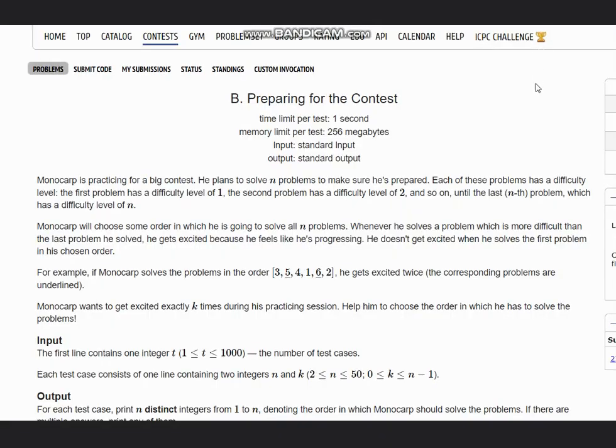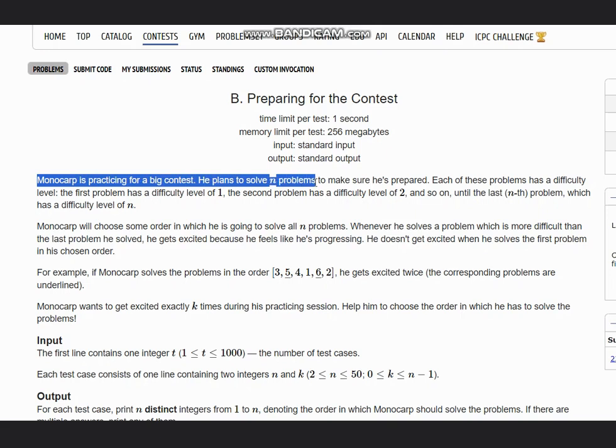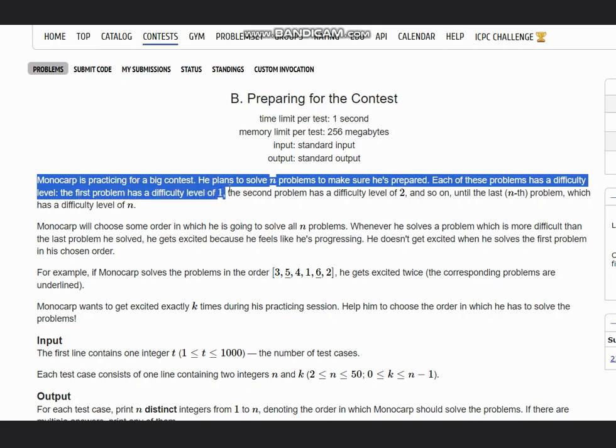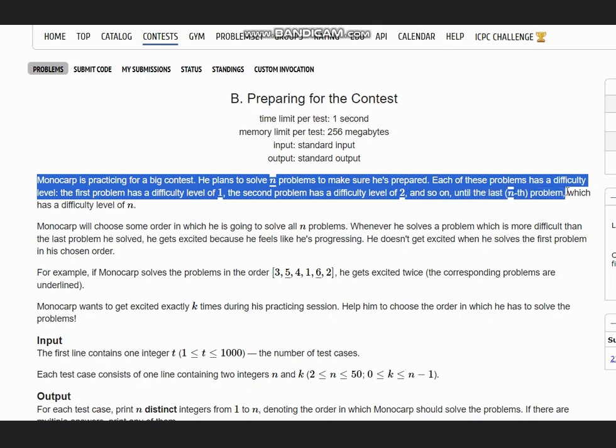Hello everyone, welcome to the channel. Here we are discussing the problem 'Preparing for the Contest' on CodeForces. The problem states that Monocarp is practicing for a big contest. He plans to solve n problems to make sure he's prepared. Each problem has a difficulty level: the first problem has difficulty level 1, the second has difficulty level 2, and so on until the nth problem which has difficulty level n.